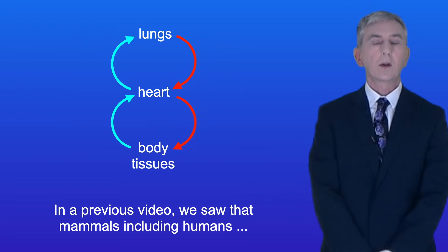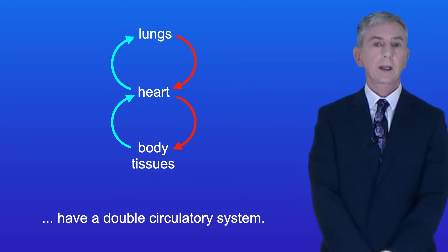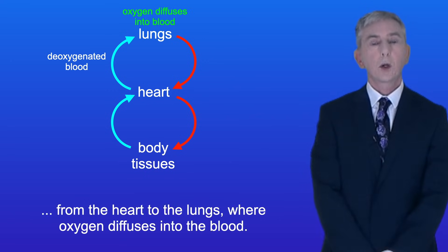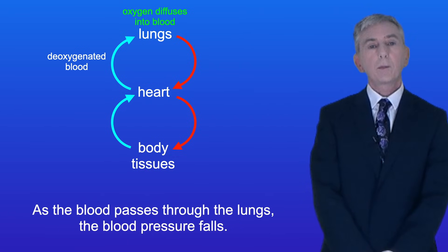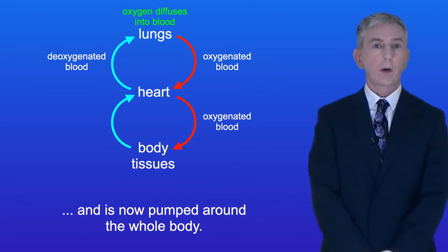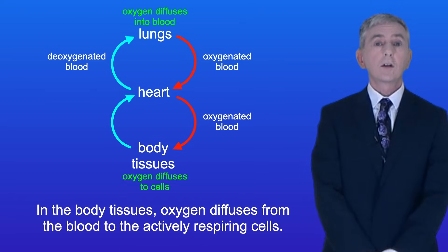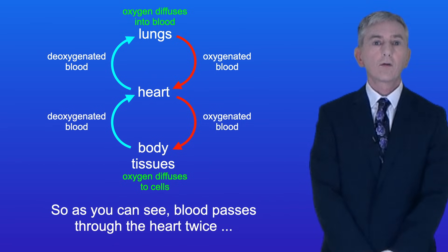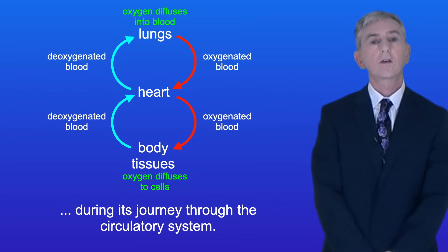In a previous video we saw that mammals, including humans, have a double circulatory system. In a double circulatory system the oxygenated blood is pumped from the heart to the lungs where oxygen diffuses into the blood. As the blood passes through the lungs the blood pressure falls. The oxygenated blood then returns back to the heart and is pumped around the whole body. In the body tissues oxygen diffuses from the blood to the actively respiring cells, and finally the deoxygenated blood returns back to the heart. So blood passes through the heart twice during its journey through the circulatory system.